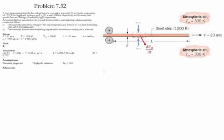Problem 7.32. In this problem there is a steel strip which emerges from a hot rolled section of a steel mill with a speed of 20 meters per second and a temperature of 1200 Kelvin. The length, the thickness, the density, and the specific heat are provided.